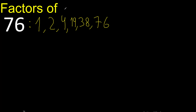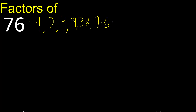Cannot be divided by 7, 8, 9, 10, 11, 12, etc. But 76 can be divided by 19. But 19 is already listed here, therefore we're finished. Factors complete.